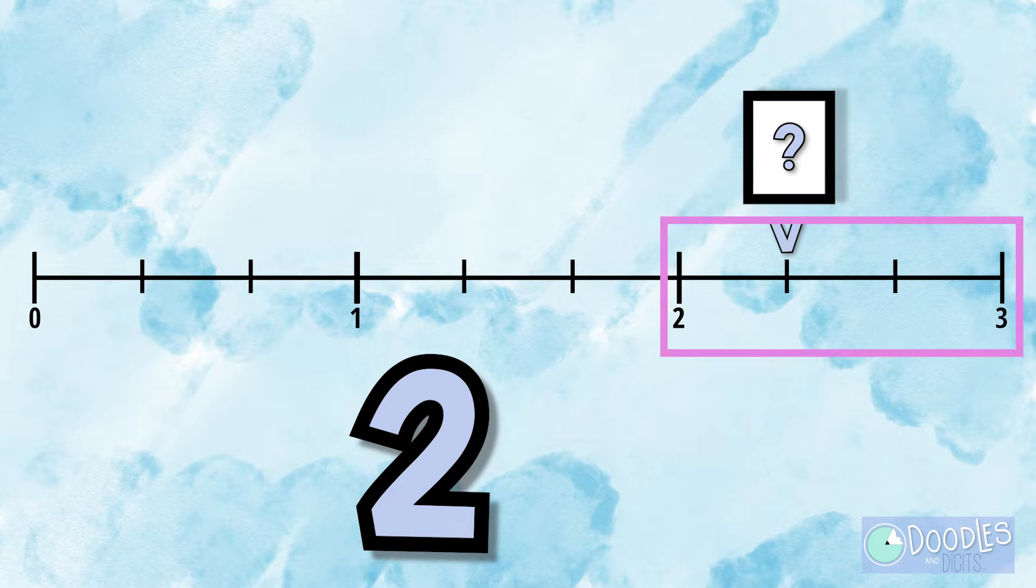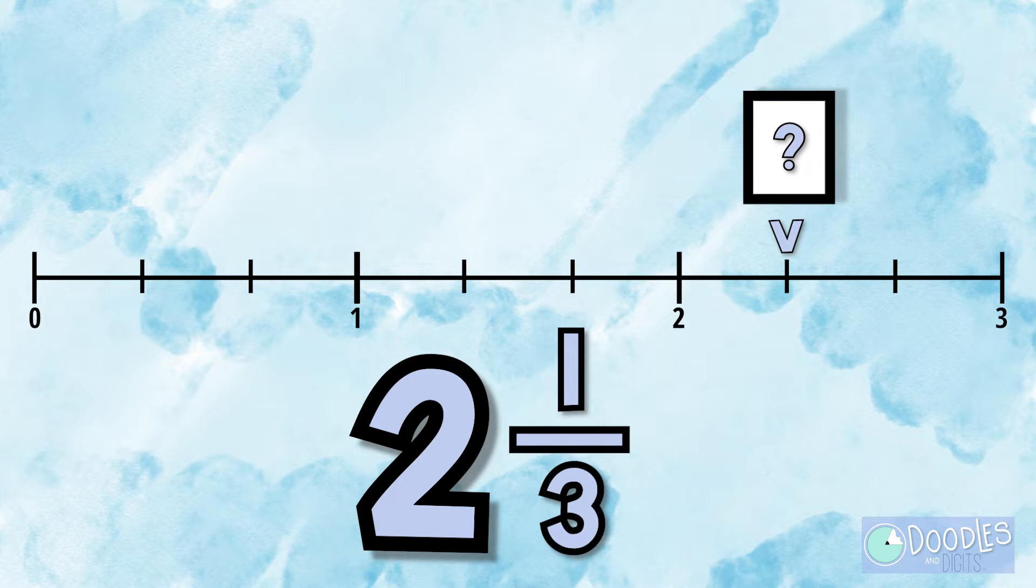Now we're going to look at the fraction and try to figure out what it's broken down into. It's broken down into thirds so our denominator will be three. Now we will see how many thirds we jump. We jump one third after two so our mixed number will be two and a third. Remember you can take your time and double and triple check to make sure that you got the correct answer.